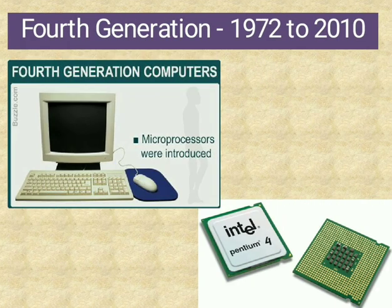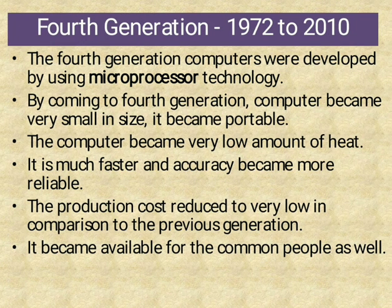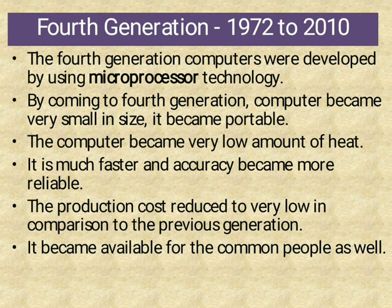4th Generation, 1972–2010 — microprocessors are used. The 4th generation of computer was developed using microprocessor technology. The computers became very small in size and portable. They had very low heat consumption, much faster accuracy, and were more reliable in comparison to previous generations. Computers became available to common people as well.